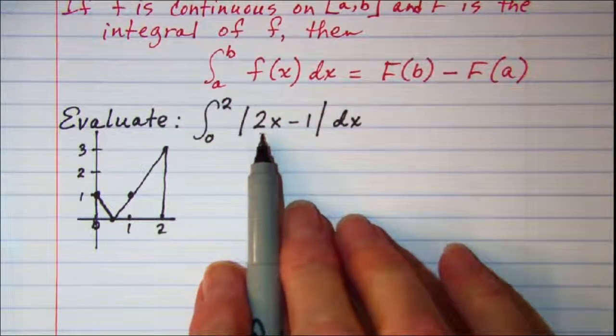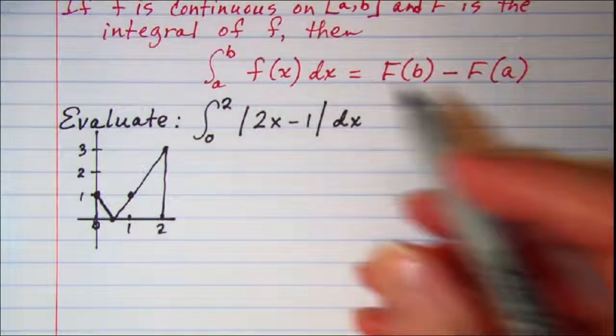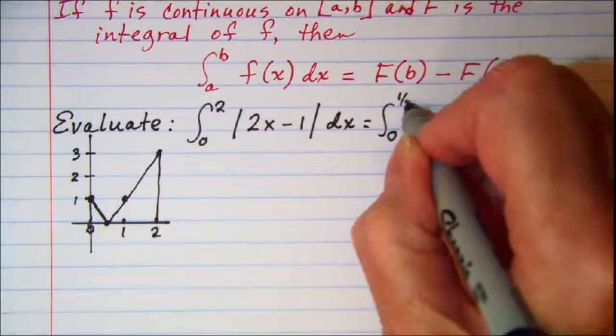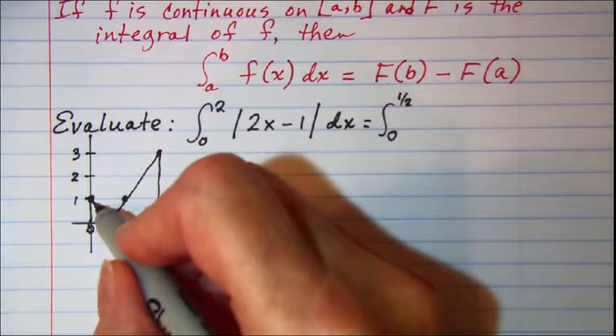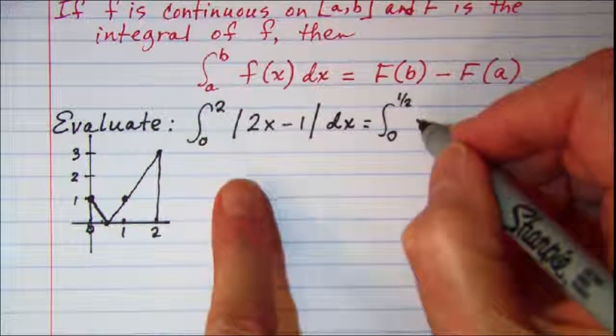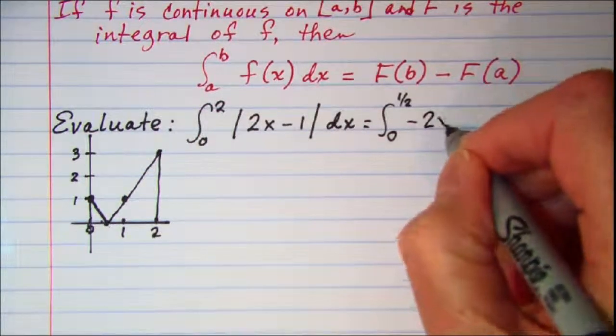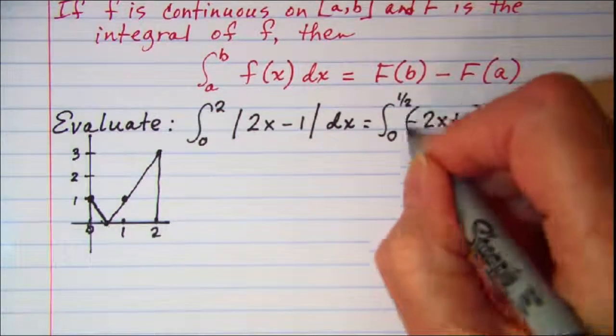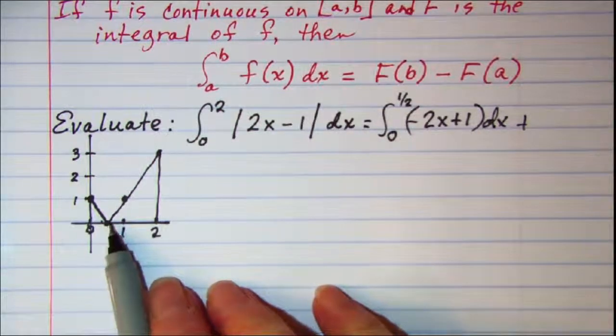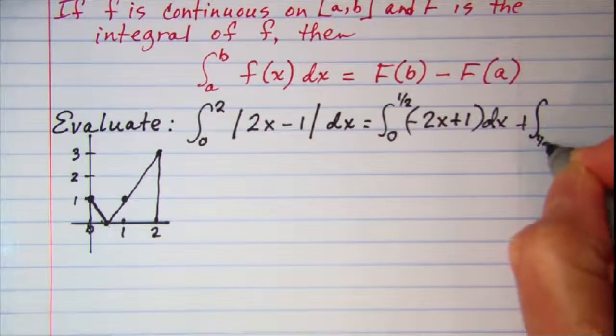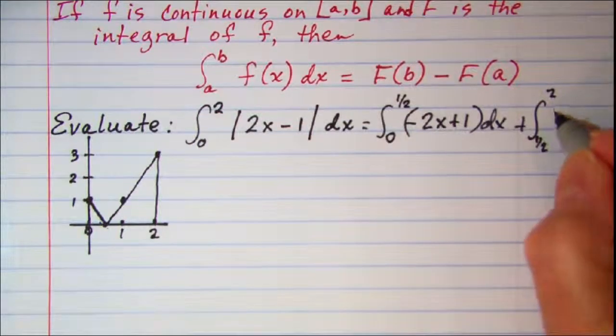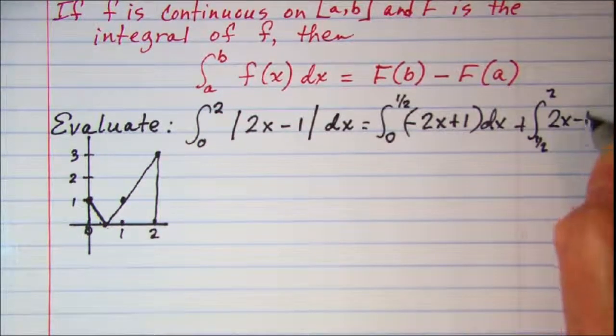So we need to split our function into two pieces. This is going to be the integral from 0 to 1/2 of the negative side of our absolute value, so it'll be negative 2x plus 1 dx, and then adding to that the integral from 1/2 to 2 of the positive side of our absolute value function, which is 2x minus 1 dx.